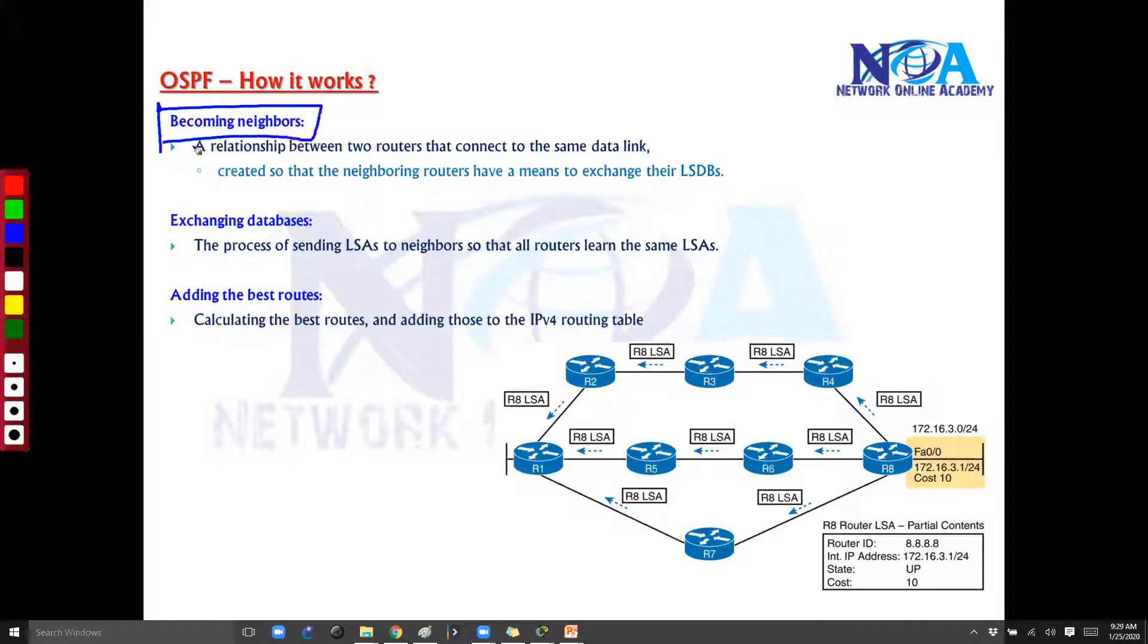The first step is they will establish the neighbor relationship. If you take an example, this is my topology. In this topology, let's say I got router 1. Now router 1 will establish the neighbor relationship with the neighbors. These two routers become neighbors first and they establish some neighbor relationship and build a neighbor table. That is the first step. Similar way, all the routers will try to establish the neighbor relationship by sending some hellos.